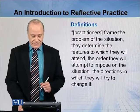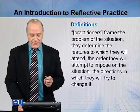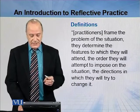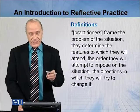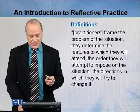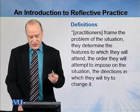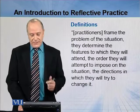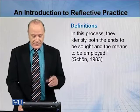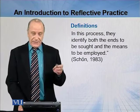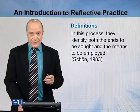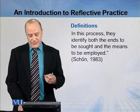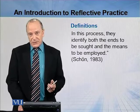For example, practitioners frame the problem of the situation, they determine the features of the situation, the parameters to which they will attend, the order they will attempt to impose on that situation and the directions in which they will try to change what happened. This is what reflective practice is about. In this process they identify both the ends to be sought in reflection and also how reflection will take place, the means by which reflection will occur.